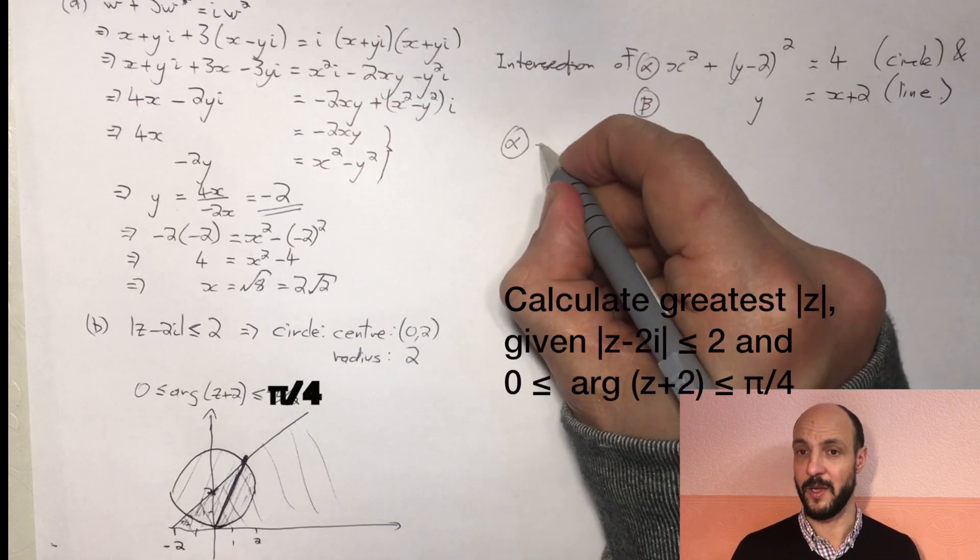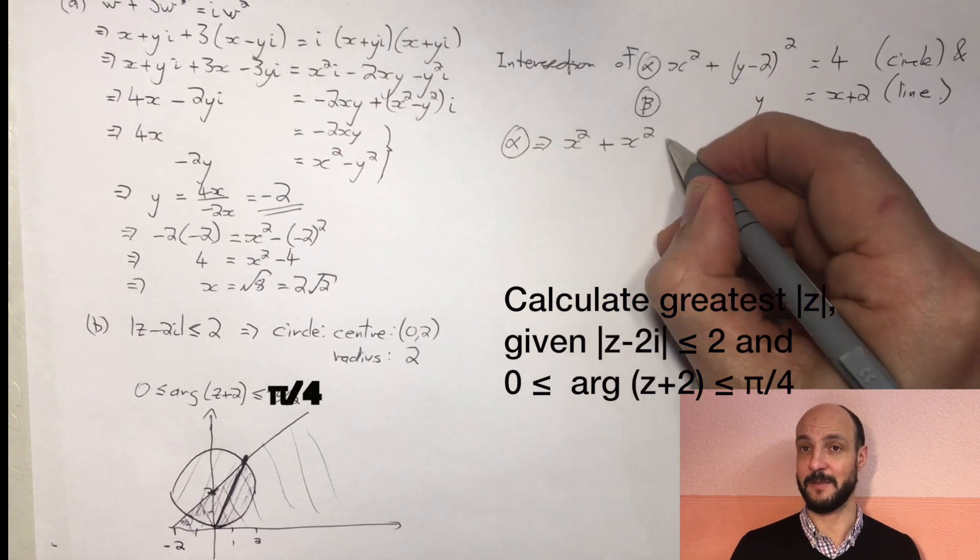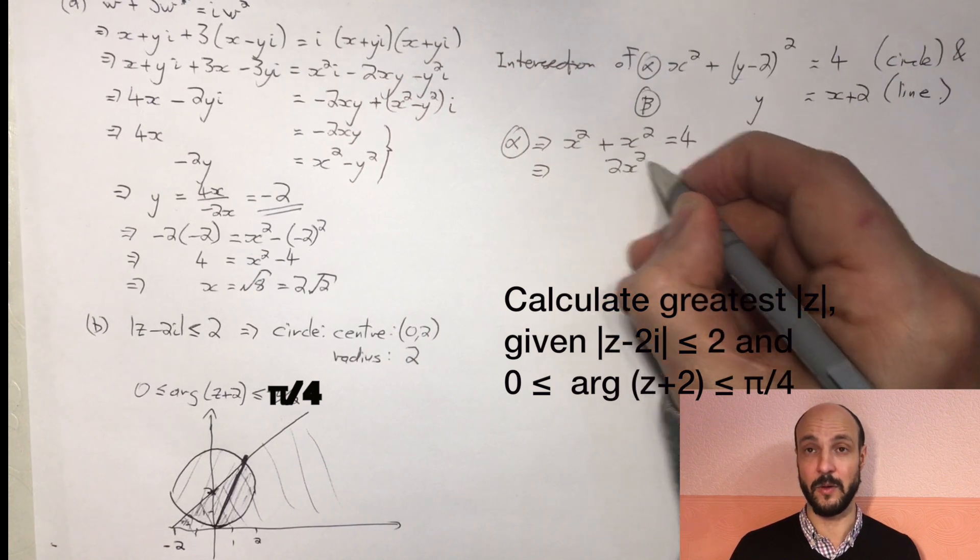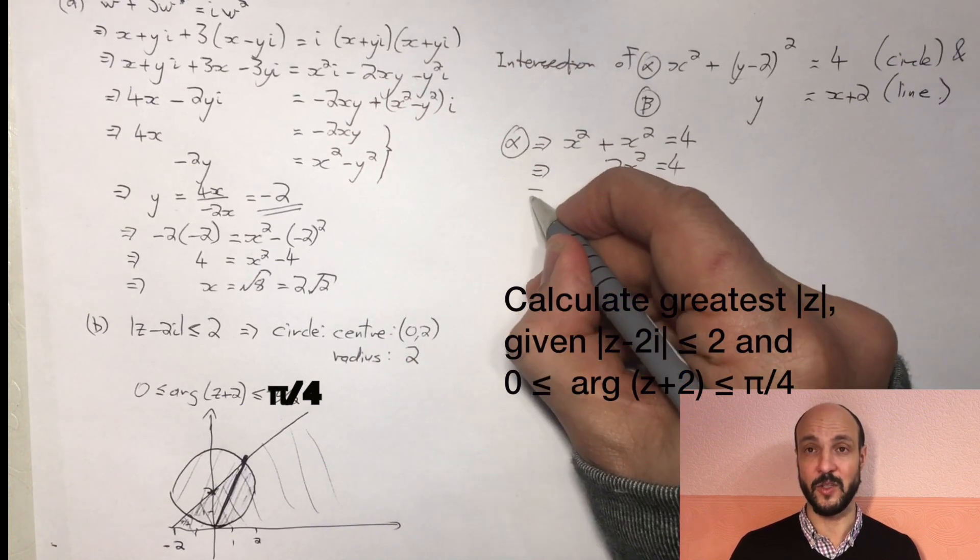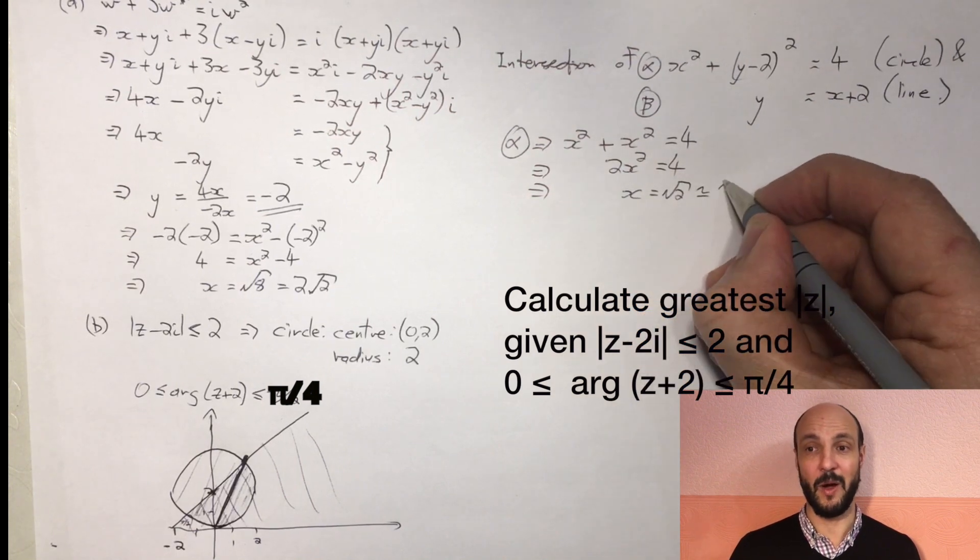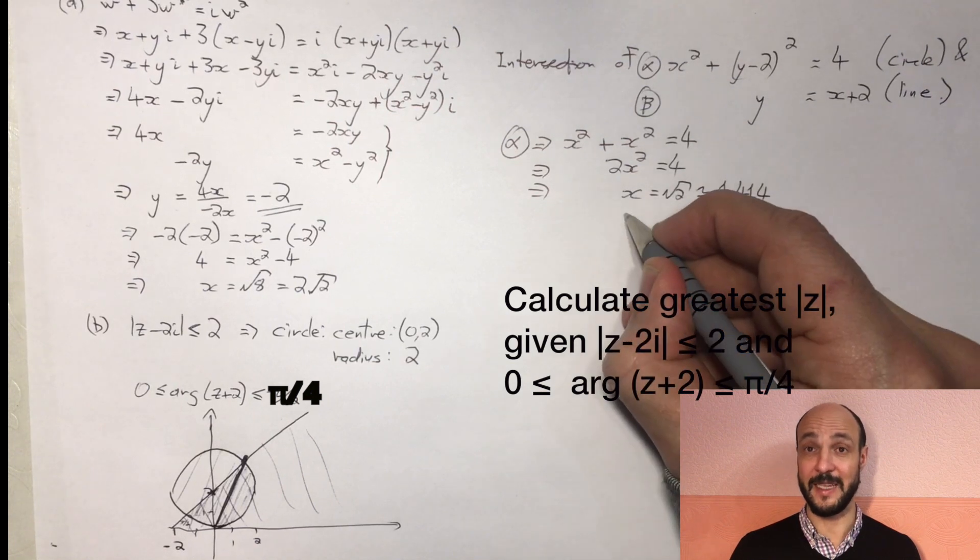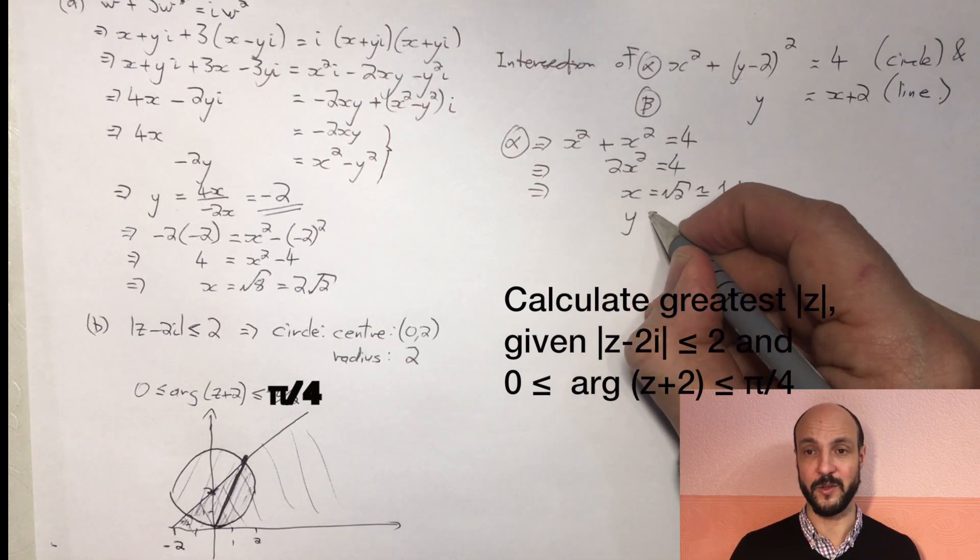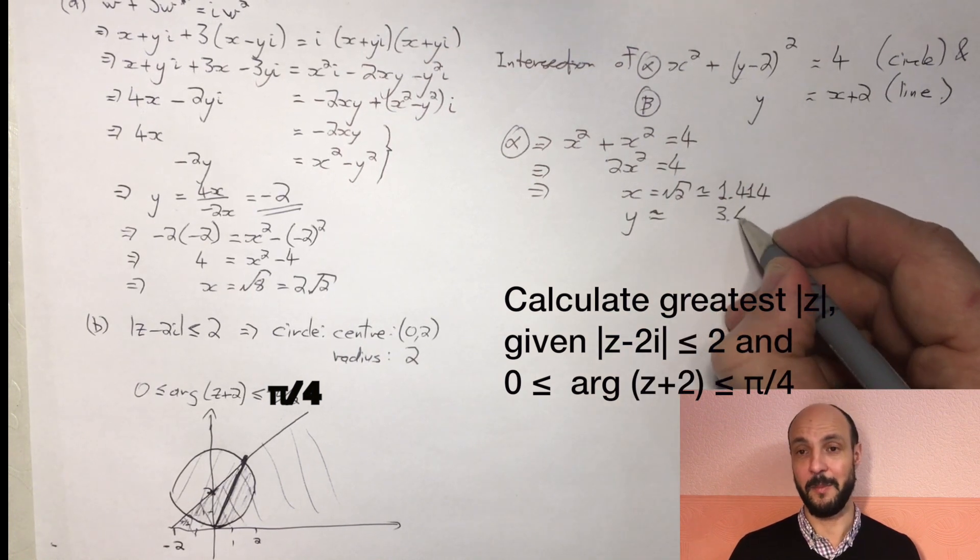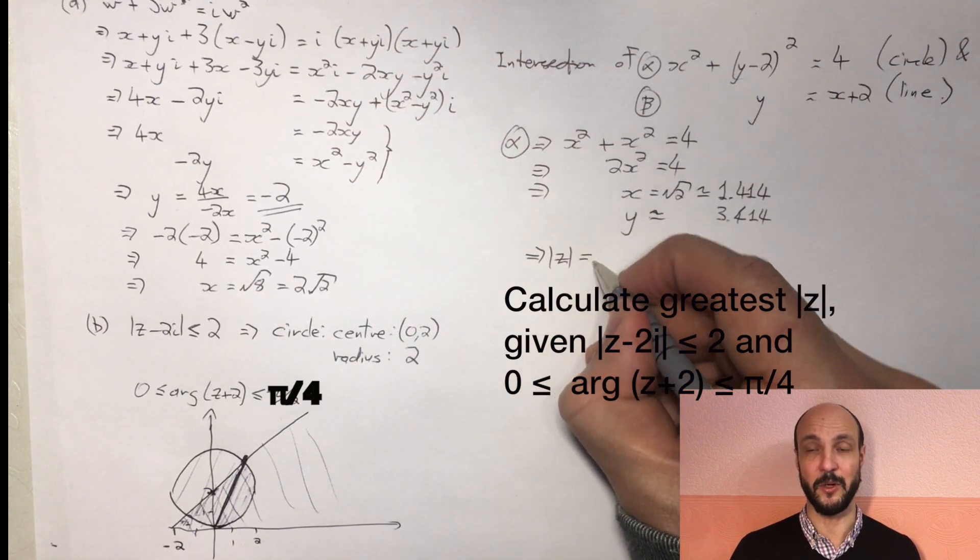So in order to solve these, what we could do is we could just substitute x plus 2 into the equation at the top. So where we see y, we're going to put x plus 2, so we'll get x² plus (x plus 2 minus 2), which is x², equals 4. So 2x² equals 4, so x is the square root of 2, which is around 1.414. y equals x plus 2, so y equals 3.414. And then we've got the magnitude of z is the square root of 1.414² plus 3.414², which is about the square root of 13.655, which to two decimal places gives us 3.70.